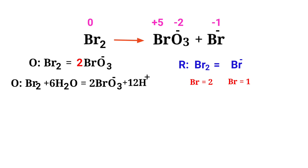Now you can balance the number of atoms in the reduction half reaction. To balance the Bromine atoms, we need to put a coefficient of 2 in front of Br⁻. Now the number of atoms are balanced in the reduction half reaction.